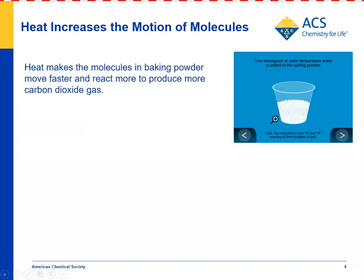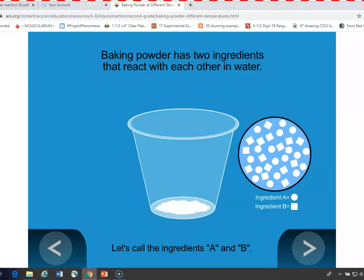You can show students an animation that helps them see on the particle level why this would happen. For the purpose of working with students, the baking powder has two active ingredients: baking soda and cream of tartar. Cream of tartar is a powdered acid. The corn starch doesn't take part in the reaction — it just helps keep moisture away from the other two reacting substances. You can tell students it has two parts: ingredient A and ingredient B, or you can tell them it's baking soda and cream of tartar.